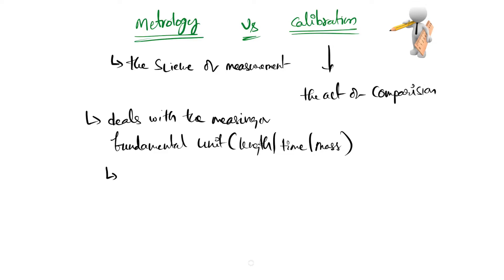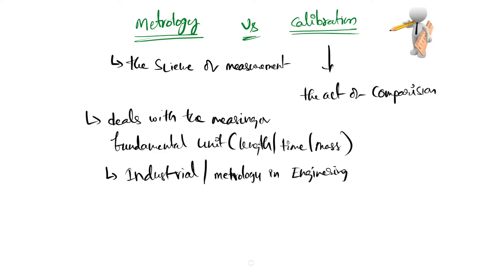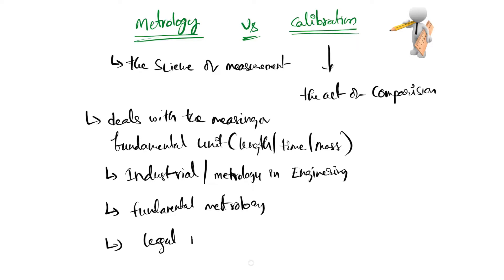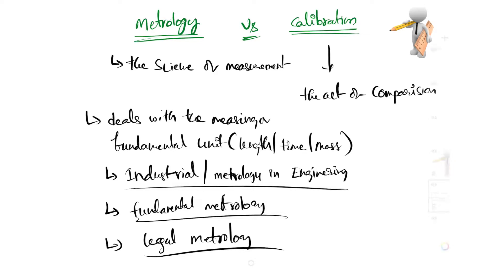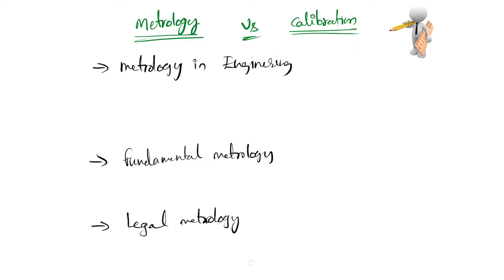The three types are: industrial metrology, or metrology in engineering; the second one is fundamental metrology; and the third one is legal metrology. Let's discuss these three in detail.